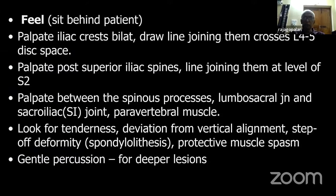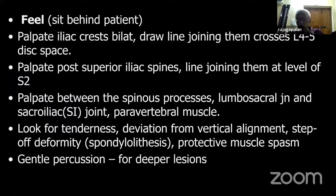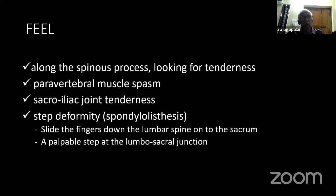Examine posteriorly: palpate the iliac crest, draw a line, palpate the spinous processes. You should know how to look for tenderness — either direct pressure or a rotatory strain. These are two methods. You can use a light or gentle percussion for deeper lesions. Run your finger down from L1; at L4-L5 or L5-S1, if you find a step, that is called a step deformity indicating listhesis.